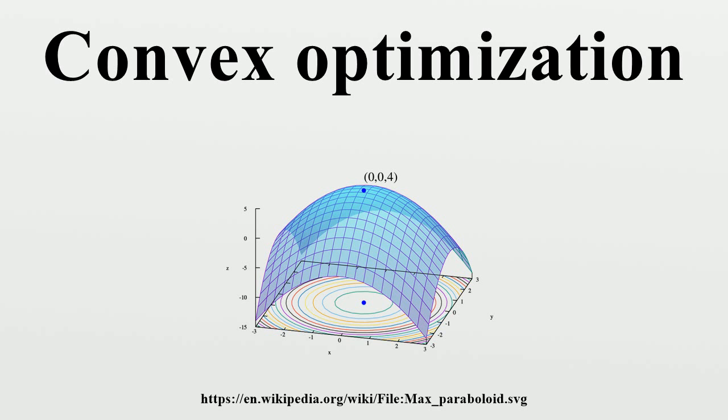The convex maximization problem is especially important for studying the existence of maxima. Consider the restriction of a convex function to a compact convex set. Then, on that set, the function attains its constrained maximum only on the boundary. Such results,